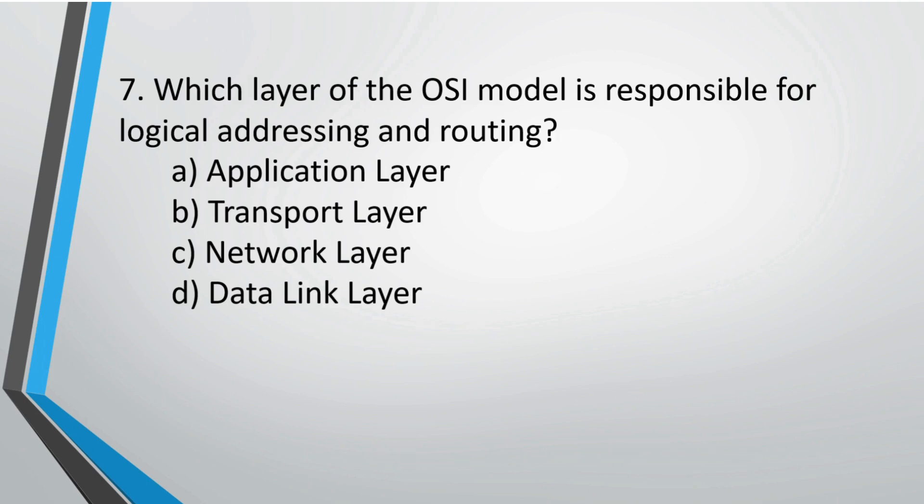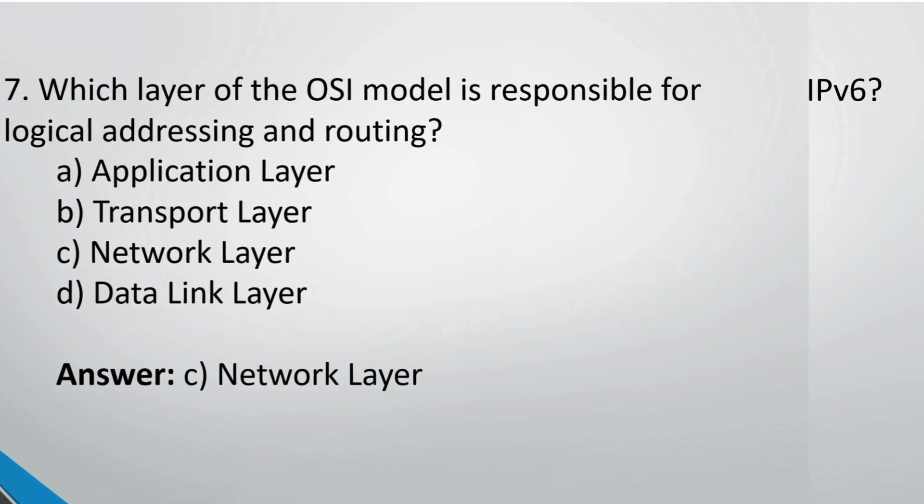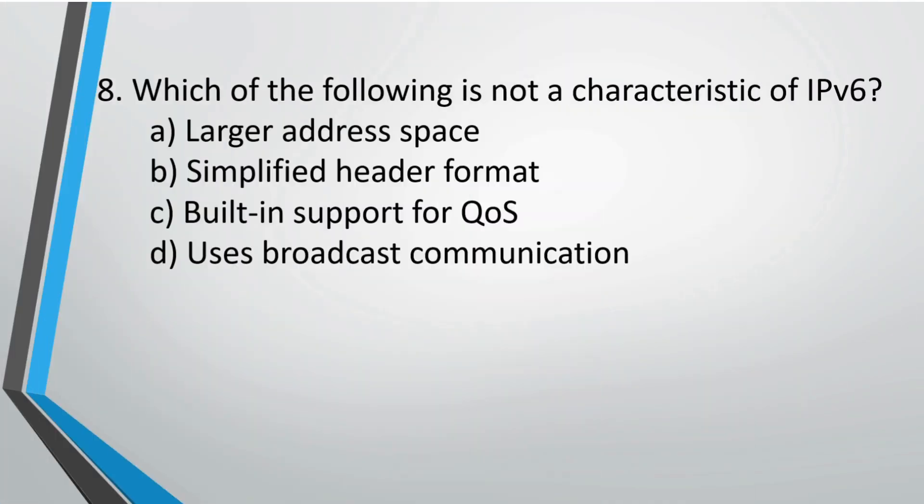Question 7: Which layer of the OSI model is responsible for logical addressing and routing? The correct answer is option C, the network layer.